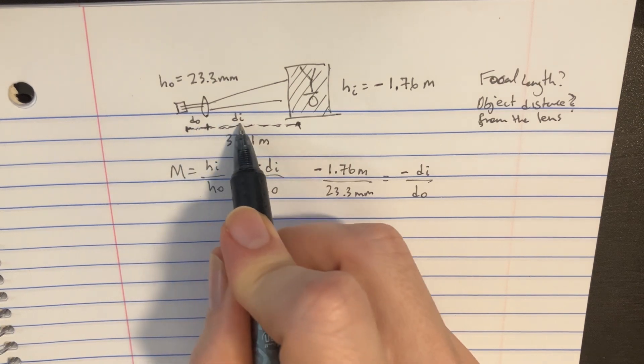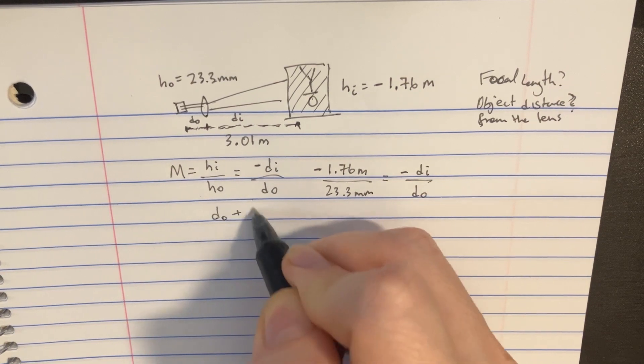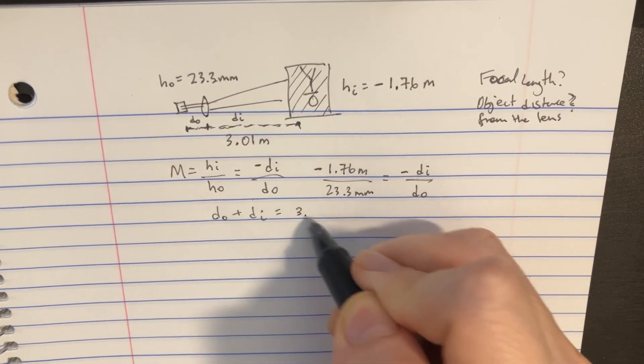We actually know that DO plus DI, that distance there, is equal to 3. So let's mark that down. DO plus DI is equal to 3 meters.